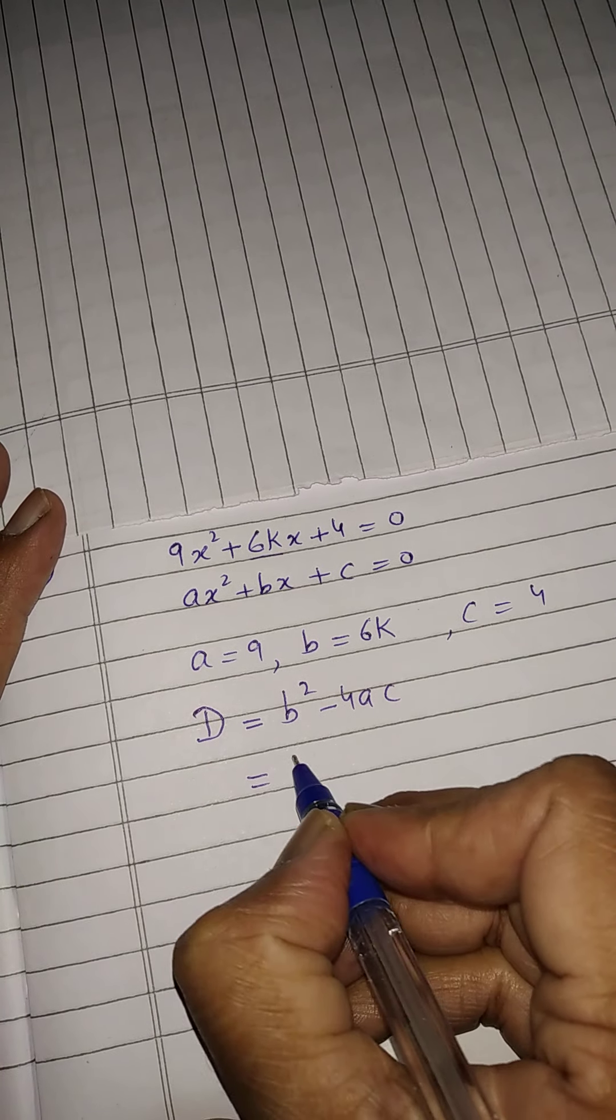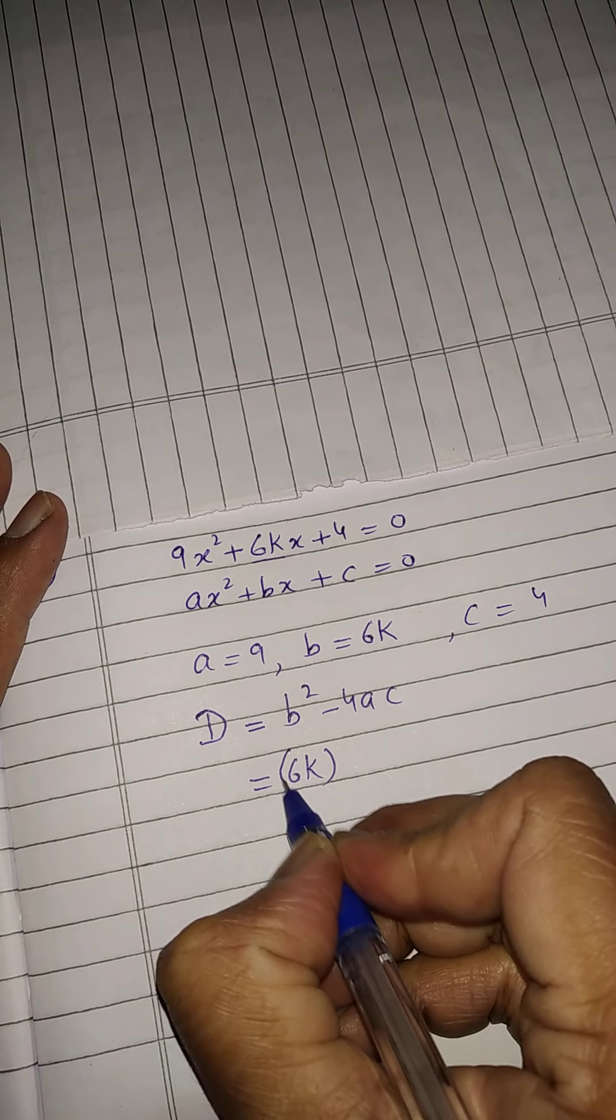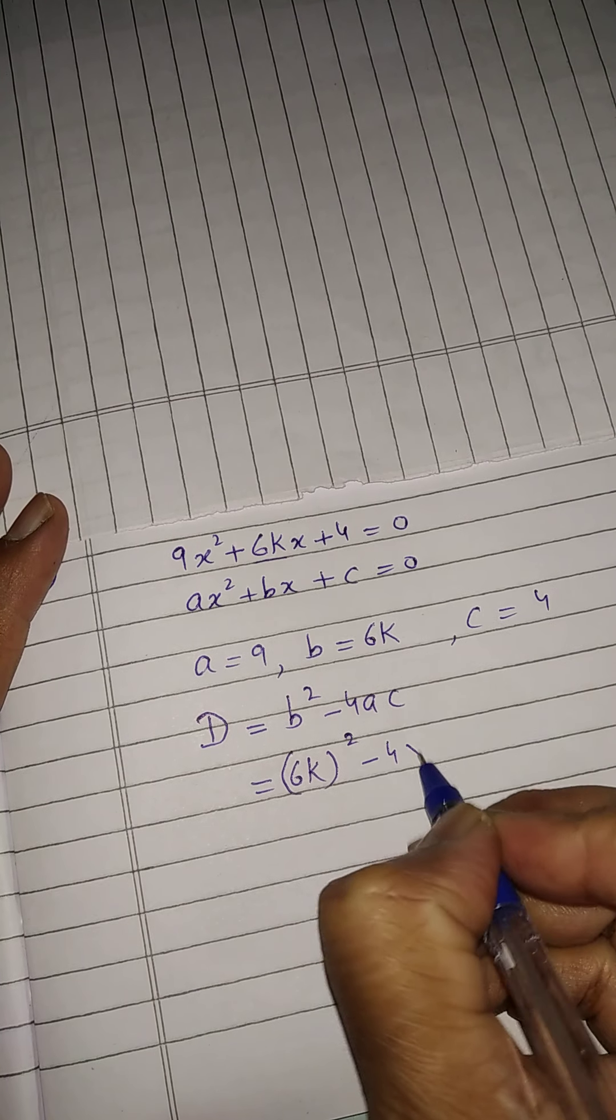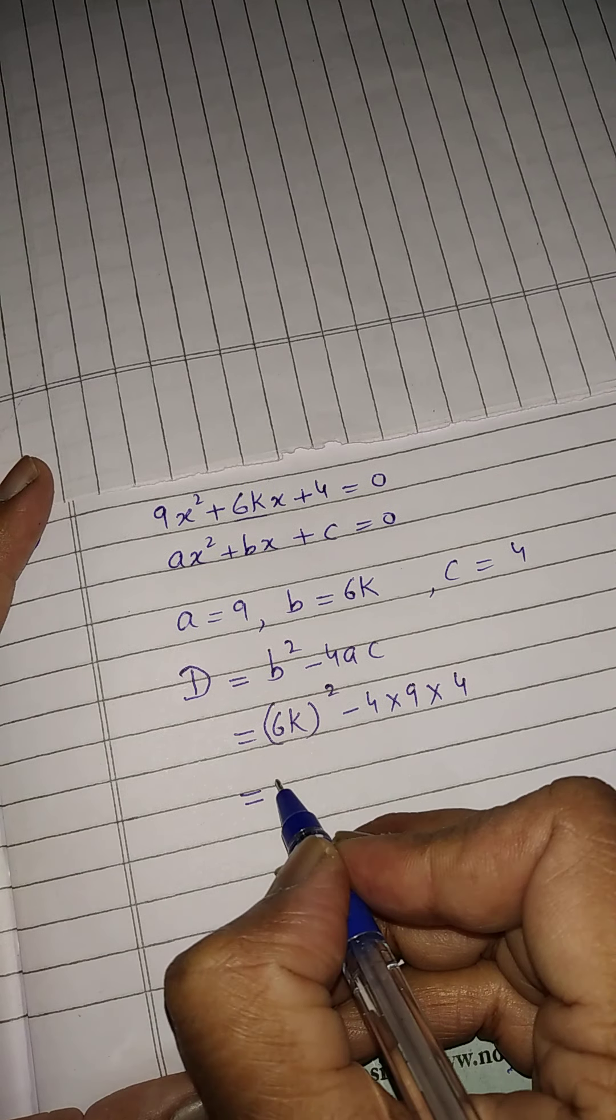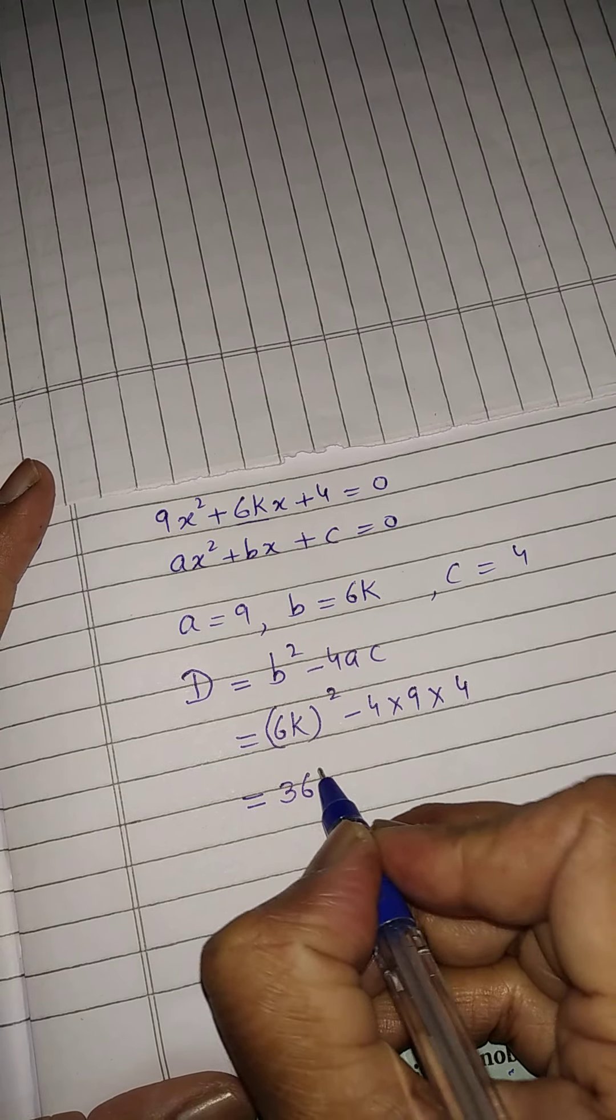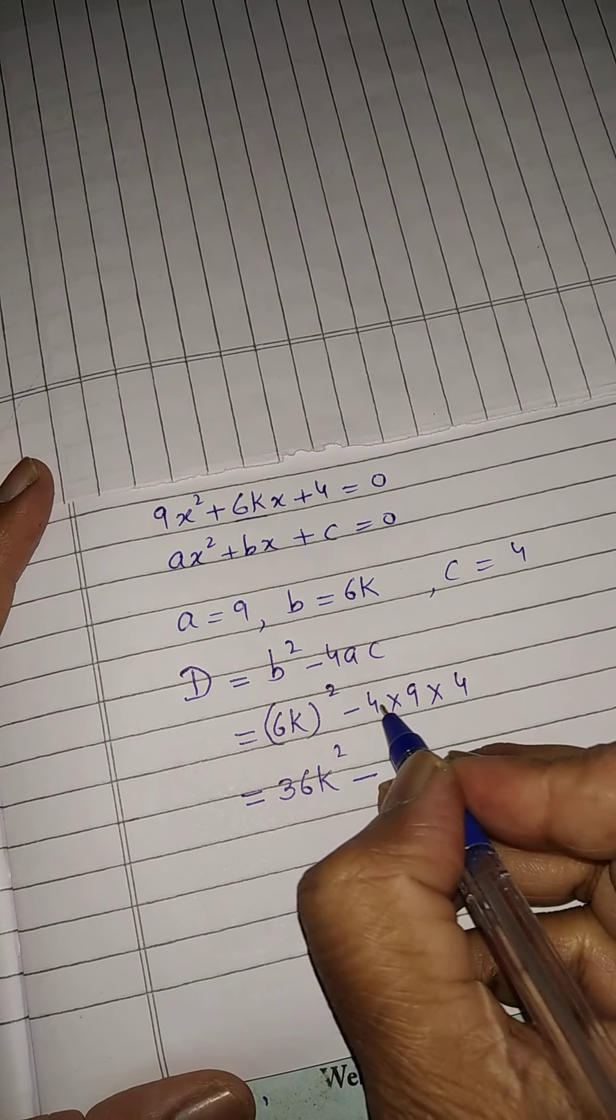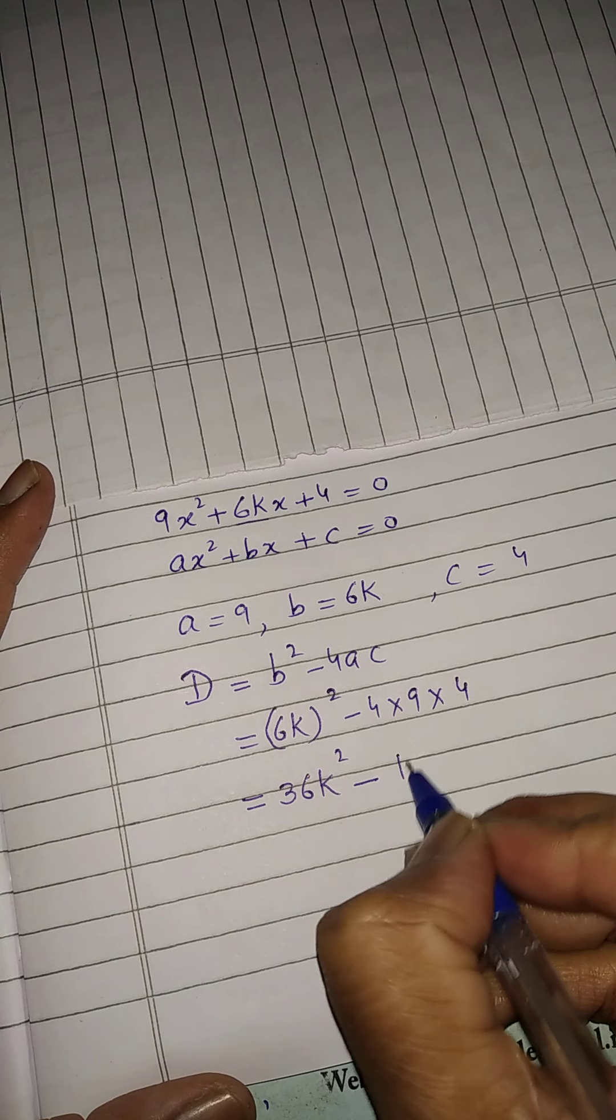So, B we have 6k whole square minus 4 into 9 into 4. So, when you calculate, it will be 36k square and when you multiply this, you will get 144.